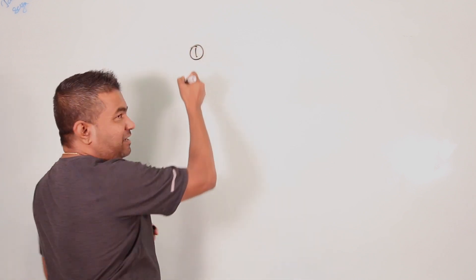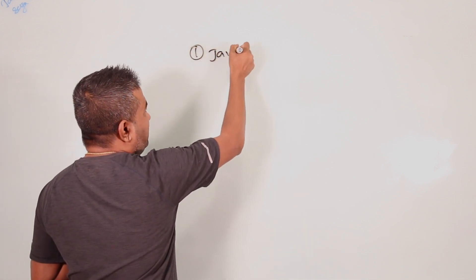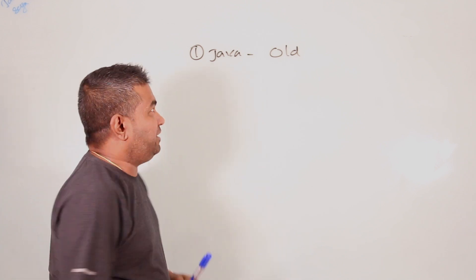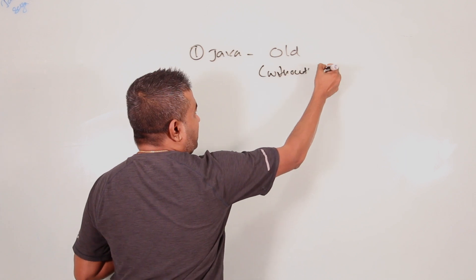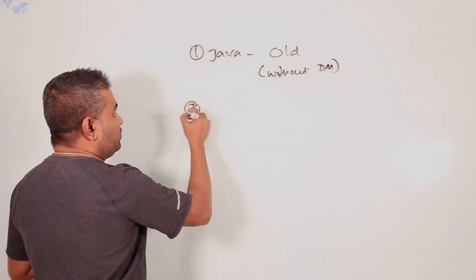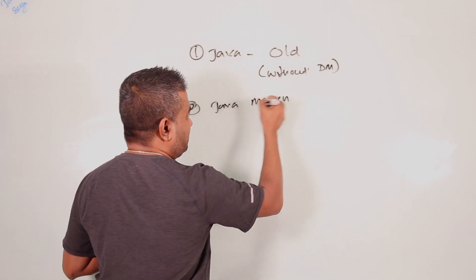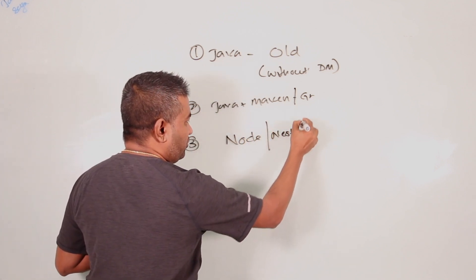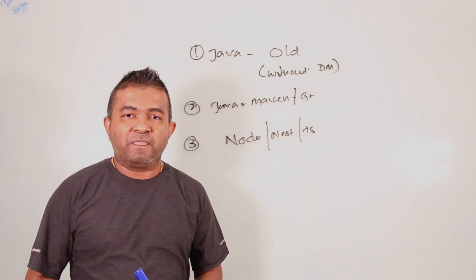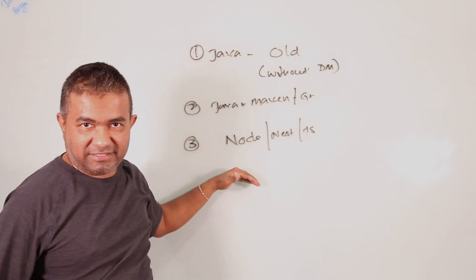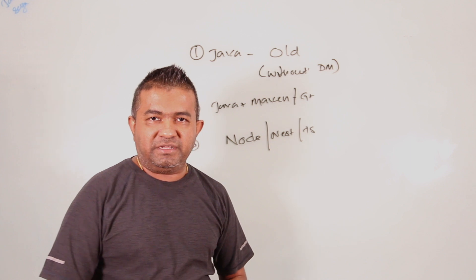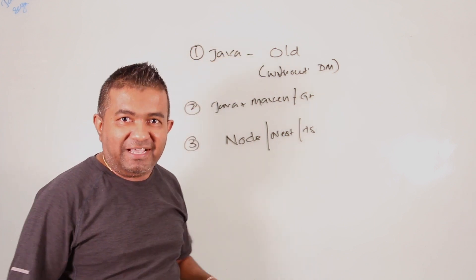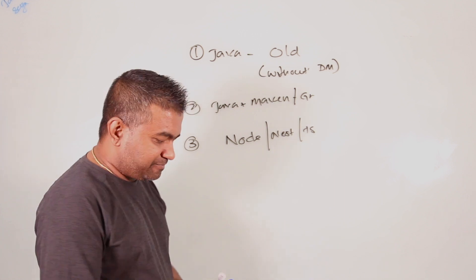I'm considering three categories. The first one is a Java-based project with old technologies — maybe Struts, maybe an old version of Spring — without a dependency management framework. The second is a Java project with something like Maven or Gradle. The third is a Node, Nest, or Express based project. Once you learn these three, you can apply the same ideas to Python, Scala, Go, or any other language.